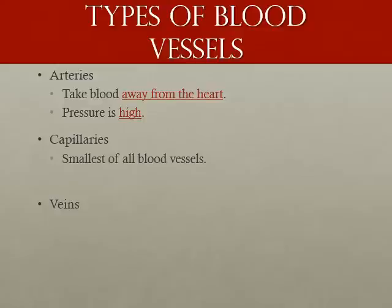Arteries branch down into smaller and smaller vessels until the blood reaches the capillaries. Capillaries are the smallest of blood vessels, typically only half of a millimeter in length. They are so narrow that red blood cells have to travel through them in single file — a bundle of 50 capillaries would be thinner than a human hair. Capillaries are made of a single layer of cells, which allows the blood to exchange nutrients and wastes with the body cells.